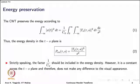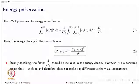The scalogram is equivalent to that of spectrogram and periodogram, both of which are derived from the energy conservation or preservation relations in their respective transforms. When it comes to CWT, the energy is preserved according to equation 1, where we have C_psi as the admissibility constant and T_x as the continuous wavelet transform. On the left-hand side you have the energy of the signal based on its time-domain representation.